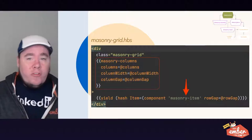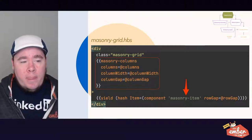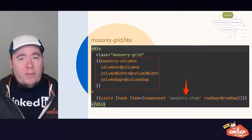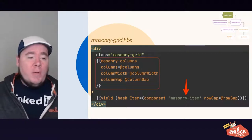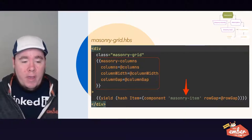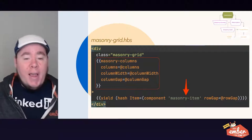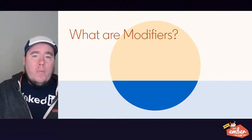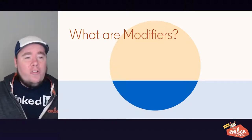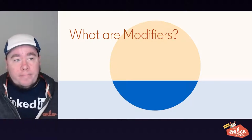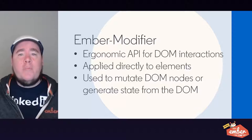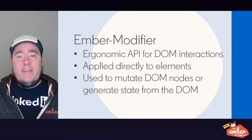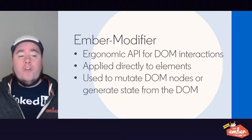Internally, within our masonry-grid template, we have the masonry-columns modifier which gets passed the number of columns — or the string 'auto' if we want it to auto-adjust as the container resizes — plus the column width and column gap. We then yield out a hash containing our masonry-item component with the row gap argument passed in. For this demo, I'm using ember-modifier, an add-on that provides an ergonomic API for DOM interactions in Ember apps.